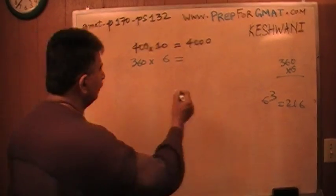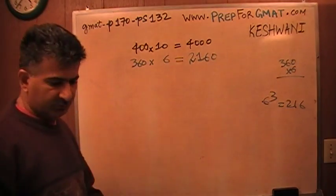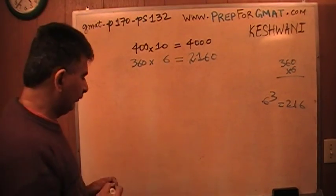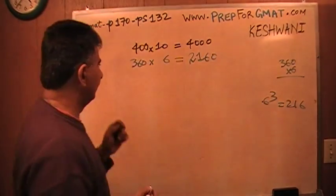So it is 2,160. It comes in handy if you know these things by heart, so you don't waste your time. But if you don't know it, just do it out. Multiply 36 by 6 and you will find this answer.